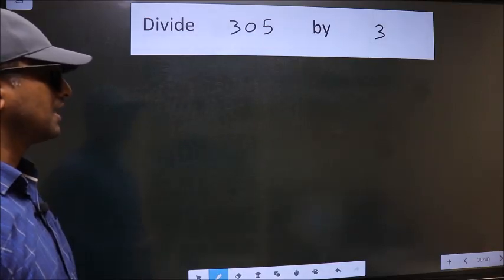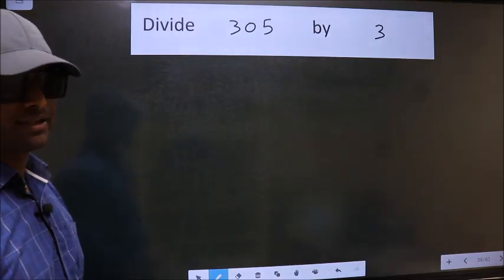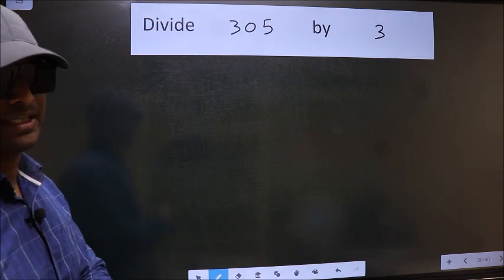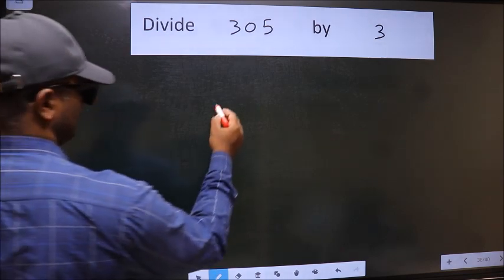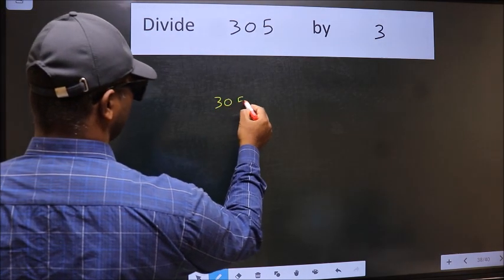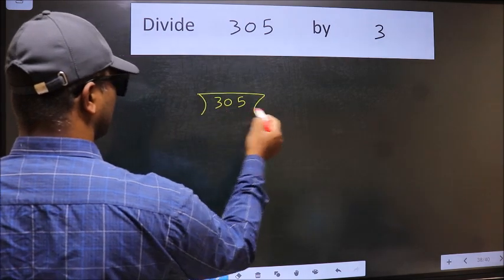Divide 305 by 3. To do this division, we should frame it in this way. 305 and 3 here.